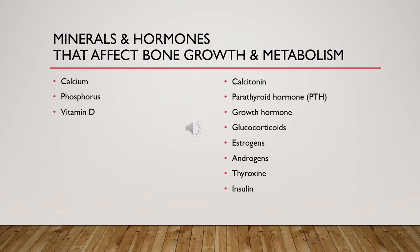Minerals and hormones that affect bone growth and metabolism include calcium, vitamin D, and phosphorus. Also important are calcitonin, parathyroid hormone (PTH), growth hormone, glucocorticoids, estrogen, androgens, thyroxin, and insulin. All of these are important for bone growth and metabolism.